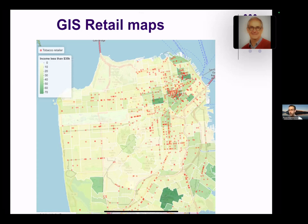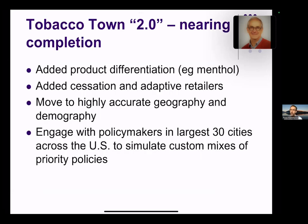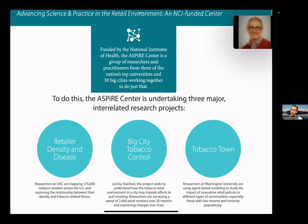We are currently engaged with policymakers in the largest 30 cities across the US to simulate custom mixes of priority policies. What is of high interest to San Francisco may be different from what's of high interest to Baltimore, and we're simulating a variety of policy mixes for each of these cities as they think through their next steps to enact tobacco regulations. We're doing this as part of a broader project generously funded by the National Institutes of Health, combining data collection abilities about smokers and tobacco with this kind of modeling.